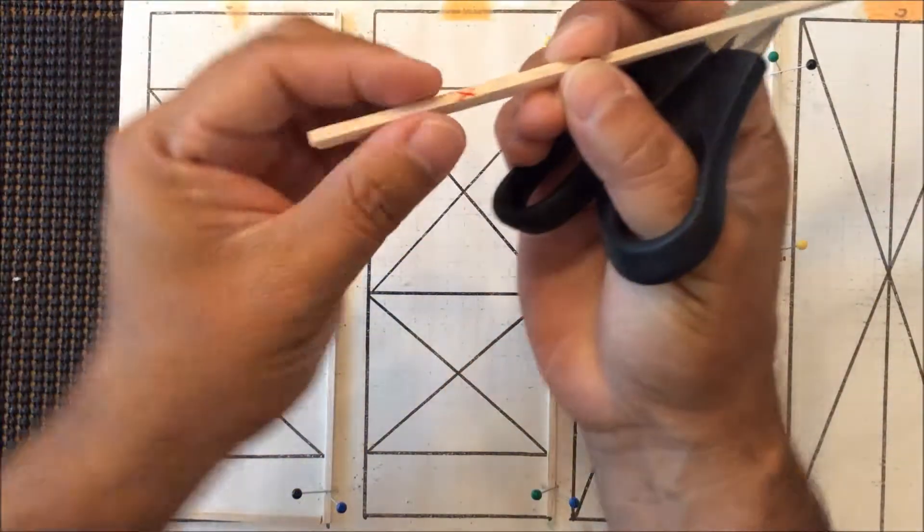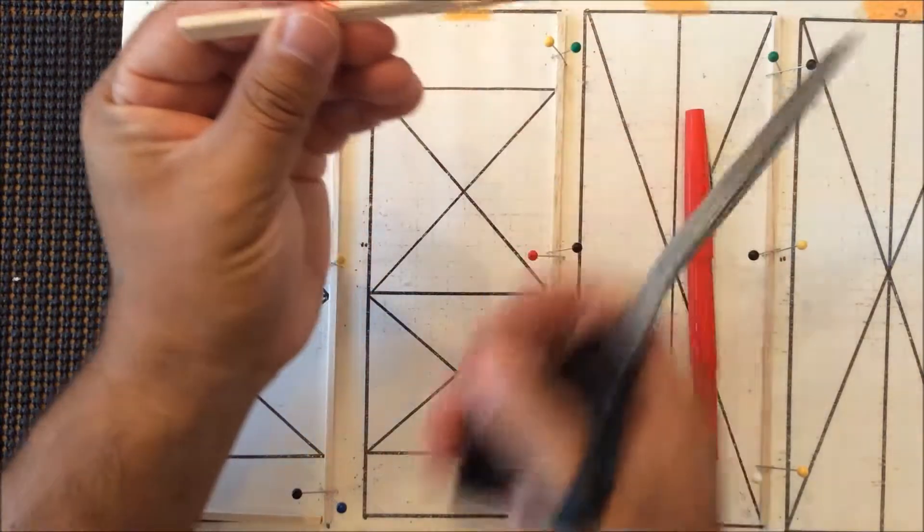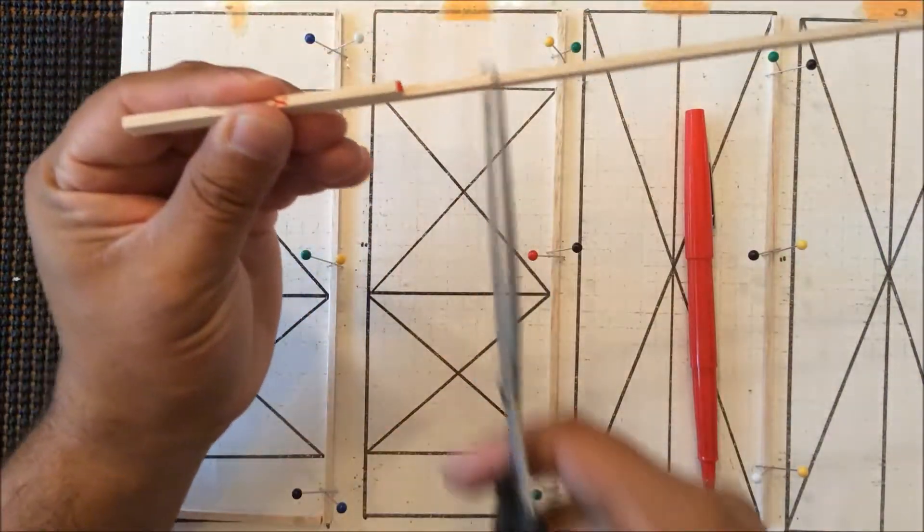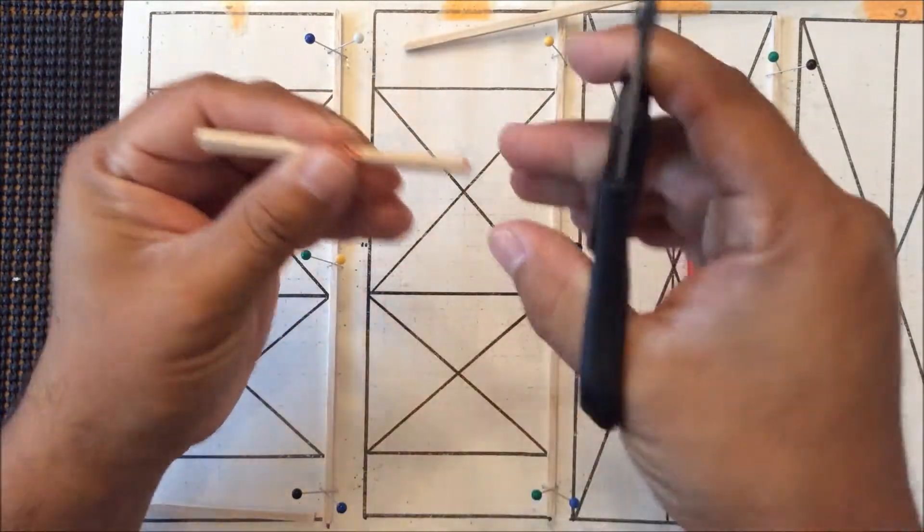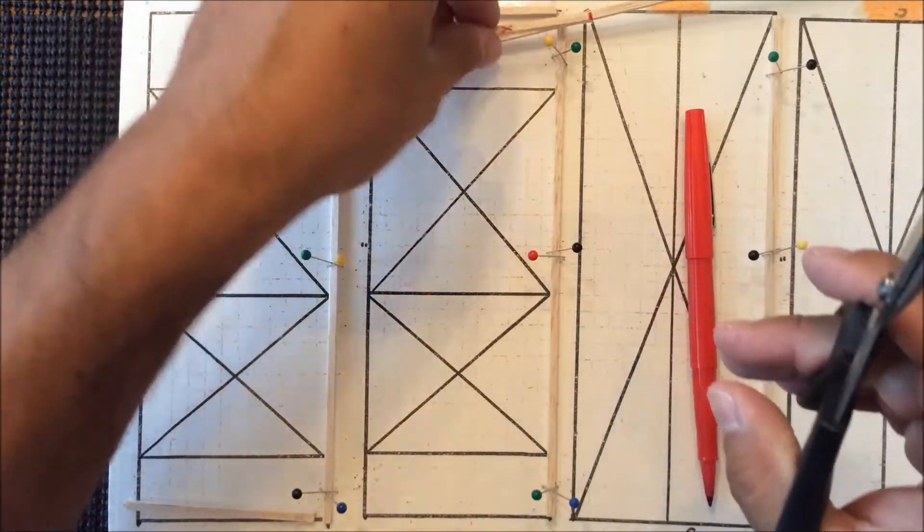So again, line up the ends as close as you possibly can. Put the scissors right on the end of your stick and make a straight cut straight through for the remaining views.